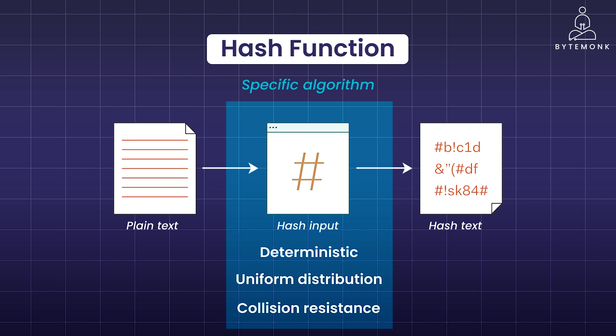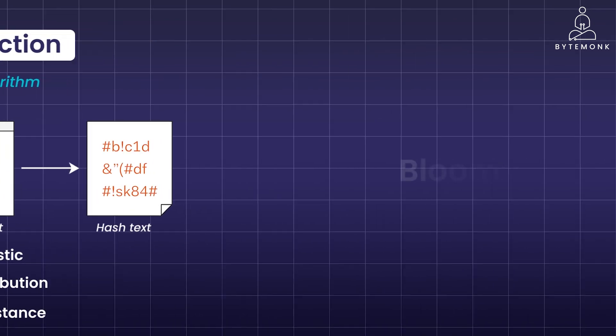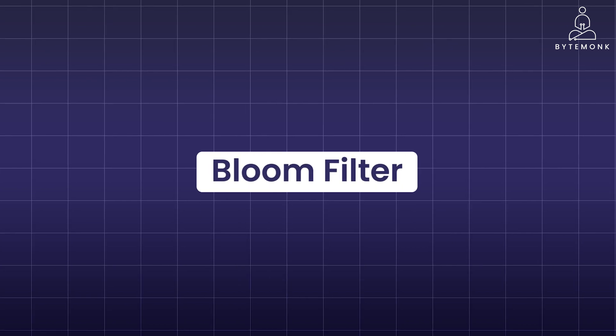But what if you only care about knowing if an element might be present in a set — not necessarily retrieving the element itself? And what if space is a precious commodity? That is where Bloom filters shine. A Bloom filter in a nutshell is a clever technique that acts like a probabilistic shortcut. It tells us with high accuracy if something might exist, even if it can't guarantee it's there. Think of it like a super efficient index of your data.